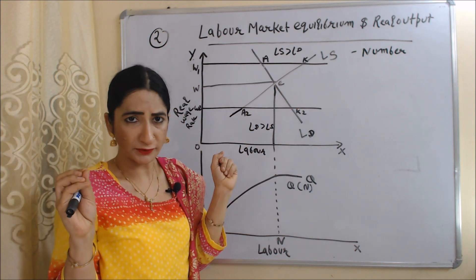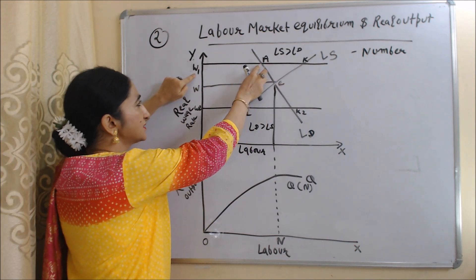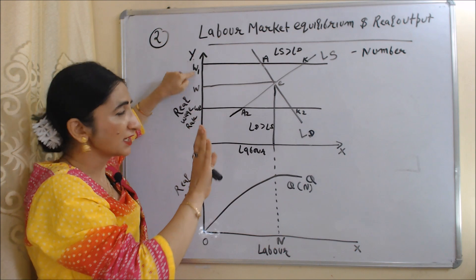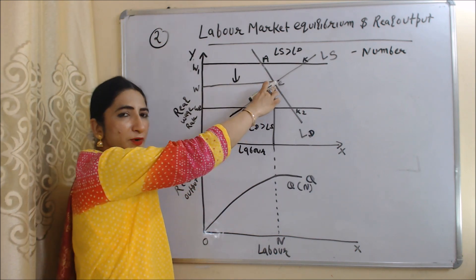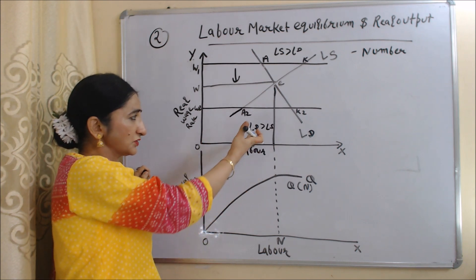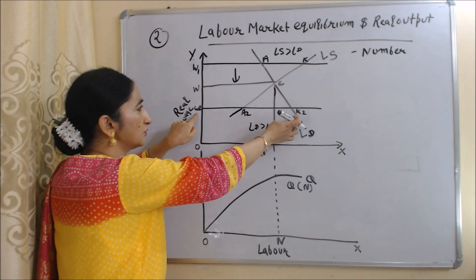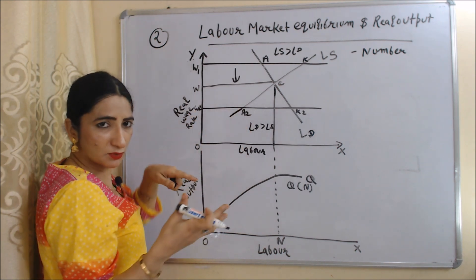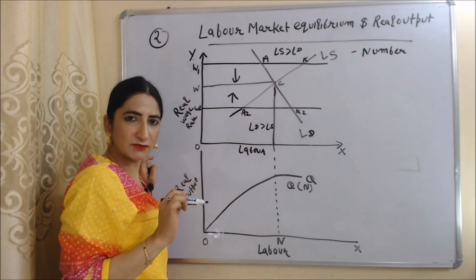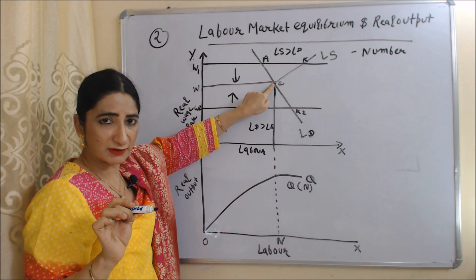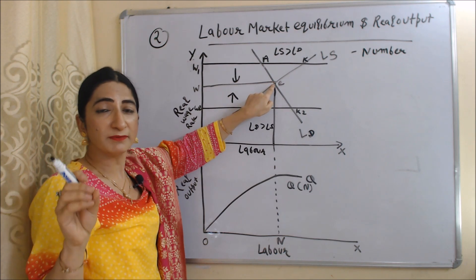In the short run, the economy can deviate from point E. Suppose labor supply exceeds labor demand — employers will reduce the wage rate, and we return to E where labor demand equals labor supply. Conversely, if labor demand exceeds labor supply, the wage rate will increase and we again return to equilibrium E. So in the long run, labor demand always equals labor supply and we achieve full employment at point E.